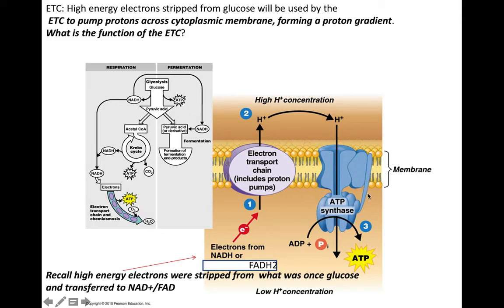ATP synthase is a membrane protein-enzyme complex with two functions: a water-filled proton channel through which hydrogen ions can flow, and active sites to bind ADP and inorganic phosphate. As protons flow through ATP synthase, it causes the enzyme to change shape and actually spin in space. In this process, ATP synthase catalyzes formation of a new covalent bond between ADP and inorganic phosphate, synthesizing ATP.